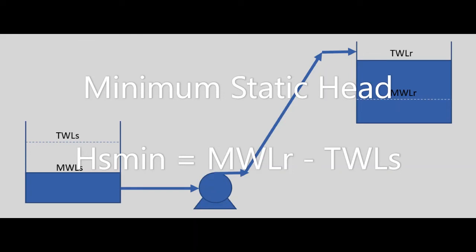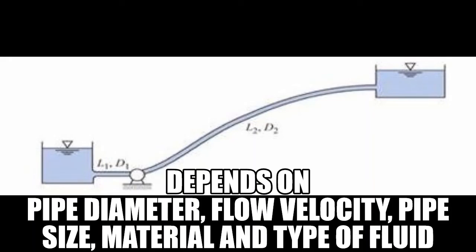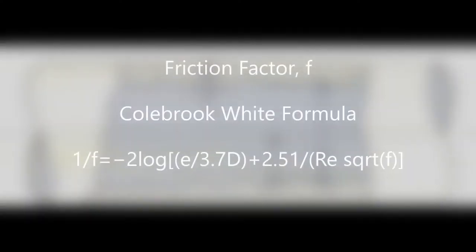Next, we will determine the frictional losses. The frictional losses is also termed as major losses as it is depending on the pipe diameter, flow velocity, pipe size, material and the type of fluid being conveyed. To calculate the frictional losses, the formula used is Darcy Weisbach equation. HF equals F times L divided by D times V squared divided by 2 times G. L is the length of the pipe, D is the pipe diameter, V is the flow velocity, G is the gravity.